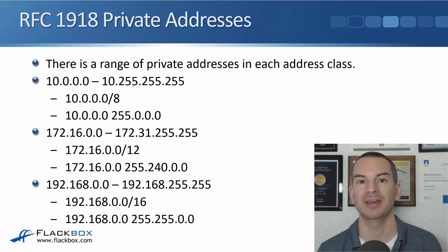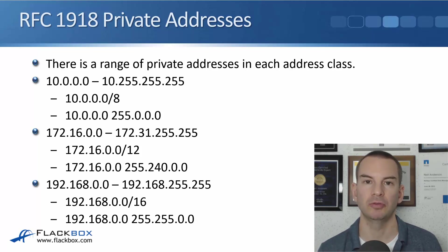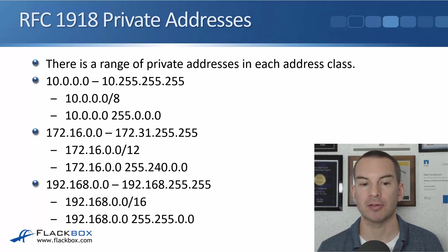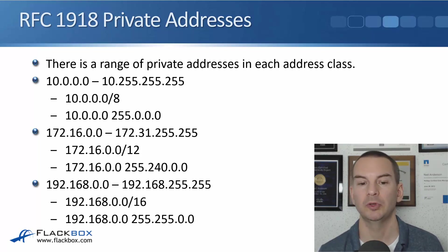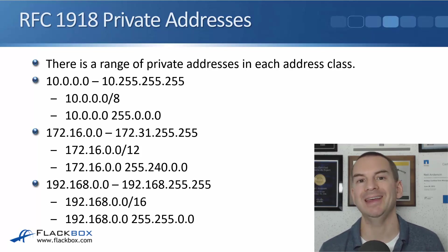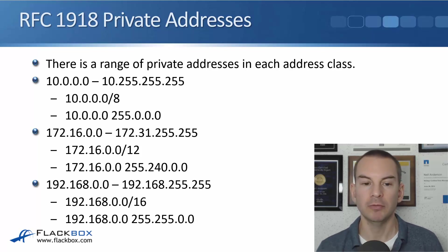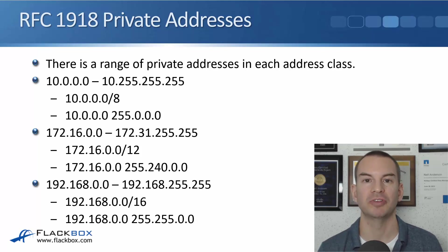There is a range of private addresses in each address class A, B, and C. The range in class A is 10.0.0.0 to 10.255.255.255, which can also be written as 10.0.0.0/8. The range in class B is 172.16.0.0 to 172.31.255.255, that's 172.16.0.0/12. And the range in class C is 192.168.0.0 to 192.168.255.255, that's 192.168.0.0/16. The class A and class C ranges are easy to remember; the one to commit to memory is the class B range: 172.16.0.0 to 172.31.255.255.